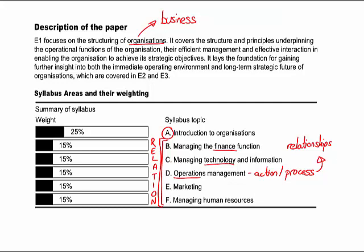Those first three pillars are very tangible, operational-based items: what are we doing as a business, how do we use technology to make it more efficient, and how do we use finance to control it. We then complement that with two broader, more holistic issues. With marketing, we're thinking about the relationship with the customer — how do we identify, anticipate and meet a customer's needs efficiently.